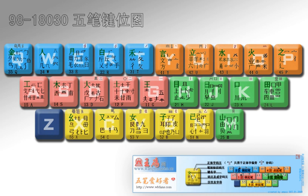Despite its steeper learning curve, this method remains popular in Chinese communities that use traditional Chinese characters, such as Hong Kong and Taiwan. The method allows very precise input, thus allowing users to type more efficiently and quickly, provided they are familiar with the fairly complicated rules of the method. It was the first method that allowed users to enter more than a hundred Chinese characters per minute.